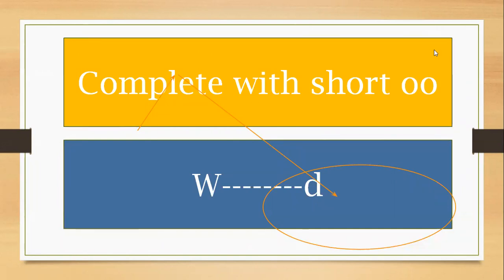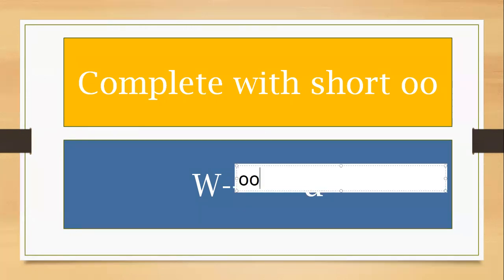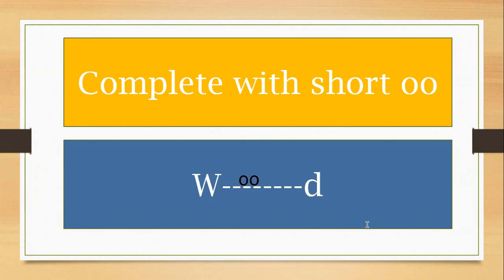Let's go next. Complete with the short O. What do we have here? If I'm going to put here double O, it will be wood. It's double O but it sounds short. Wood. Short. Wood. Excellent.